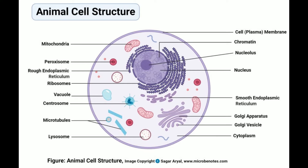The 50S subunit contains 23S and 5S rRNA, and the 30S subunit contains 16S rRNA. The ribosome is the most commonly observed internal structure in prokaryotic cells. The size and number of ribosomes differ in different prokaryotic cells. The ribosome is responsible for the formation of polypeptides and, in turn, proteins.